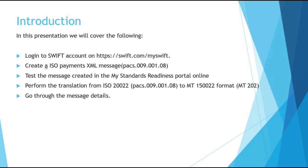We will login to a MySwift account — if you don't have one, we will create one. I will show you how to create a payments ISO equivalent message that is PAX.009.001.08. Then we will login to the MyStandards Readiness portal on MySwift and test our ISO 20022 payments message. After that, we will use a translation portal to translate the ISO 20022 message into an MT equivalent format.